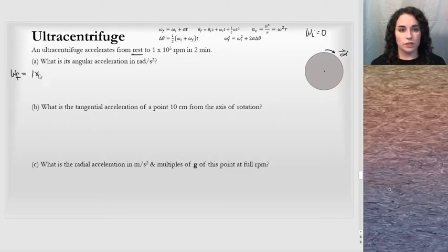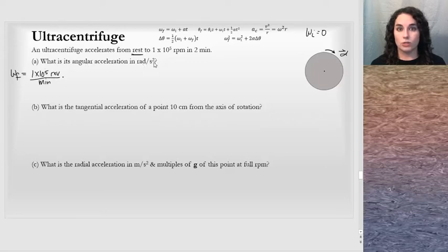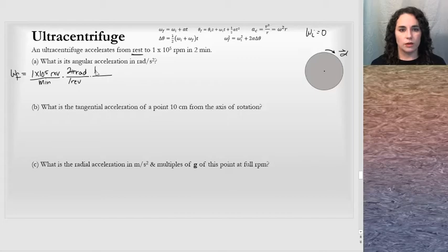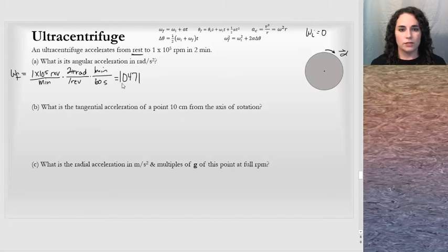Omega final is 1×10⁵ revolutions per minute. Converting to radians per second — 1 revolution is 2π radians and 1 minute is 60 seconds — running this through the calculator gives 10,471.9666 radians per second. That's omega final.